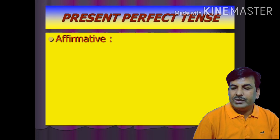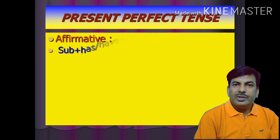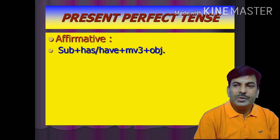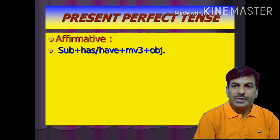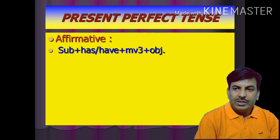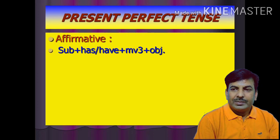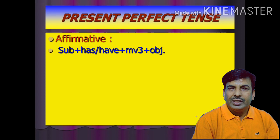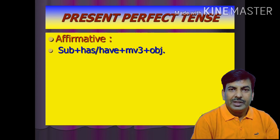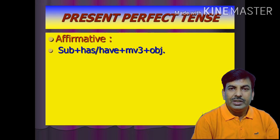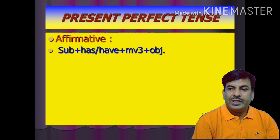First of all, affirmative. In an affirmative sentence, first comes the subject, then the helping verb — has or have — according to the number of the subject. If the subject is singular, has is used; if the subject is plural, have is used. For example, he, she, it, Ram, Mohan, Shyam, boy, girl, etc. take has, while I, you, we, they and nouns like boys, girls, books, chairs take have.